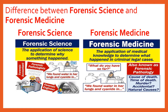Forensic science is the application of science to determine why something happened. It applies science to law and involves the use of highly developed technologies to uncover scientific evidence of a crime. It examines and analyzes evidence from crime scenes to develop objective findings that assist in the investigation and prosecution of perpetrators. Forensic medicine, by contrast, is the application of medical knowledge to determine what happened in a criminal case. It applies the principles, techniques, and knowledge of medicine — including dentistry, clinical psychology, biology, and chemistry — to a legal context.